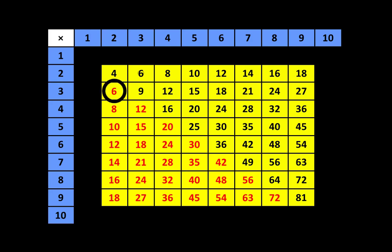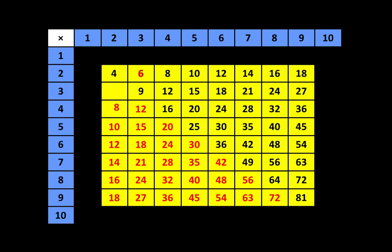Notice that 2 times 3 is equal to 6 is shown in two places on the chart. So I'm going to move the red 6 on top of the black 6. Also, the relationship between 2, 4, and 8 is shown in two places on the chart, so I'm going to move the red 8 on top of the black 8. Here's another example: the relationship between 2, 5, and 10 is shown in two places on the chart, so I'm going to move the red 10 on top of the black 10.